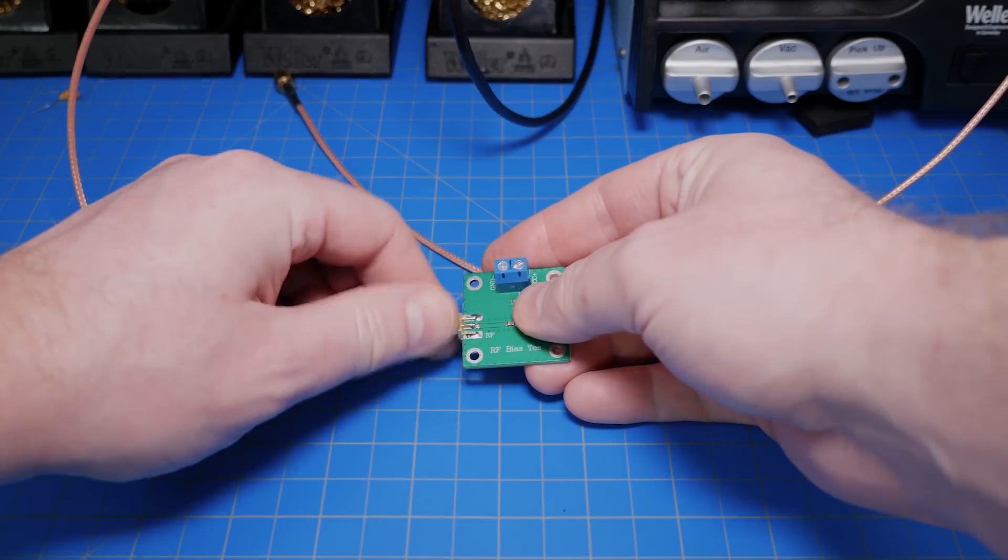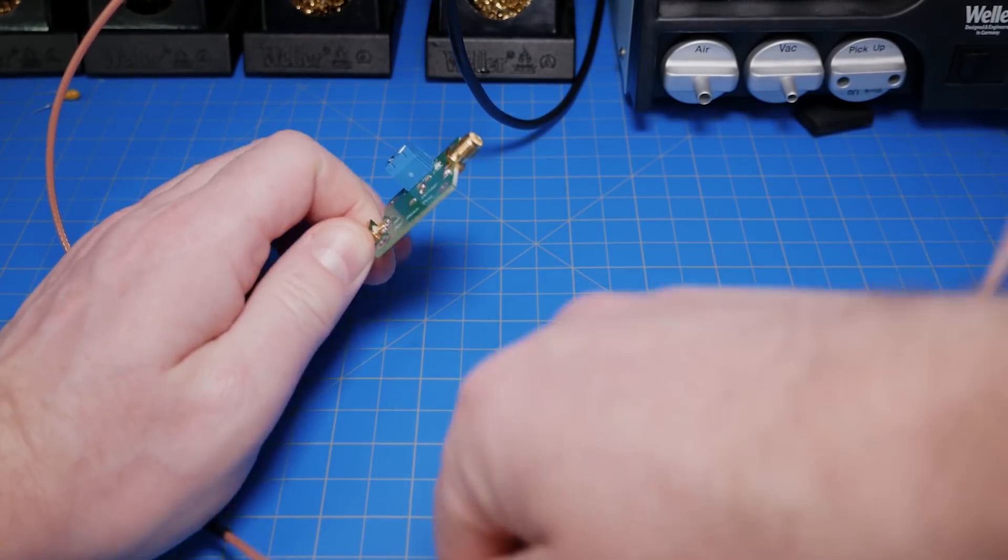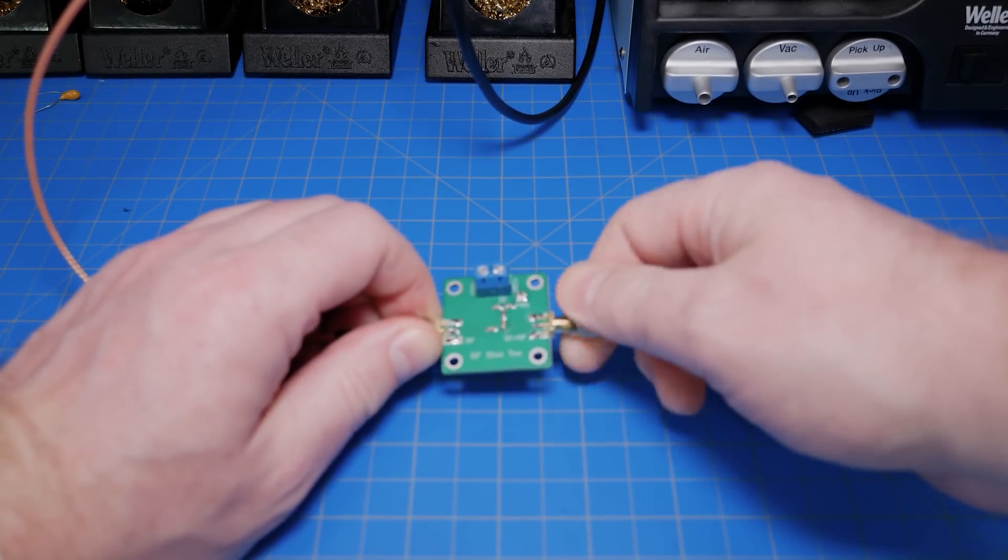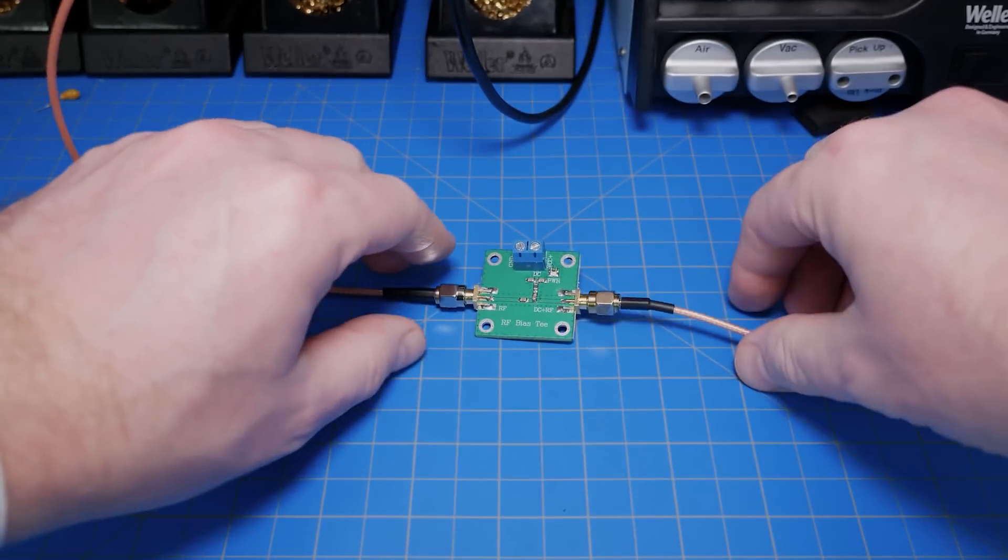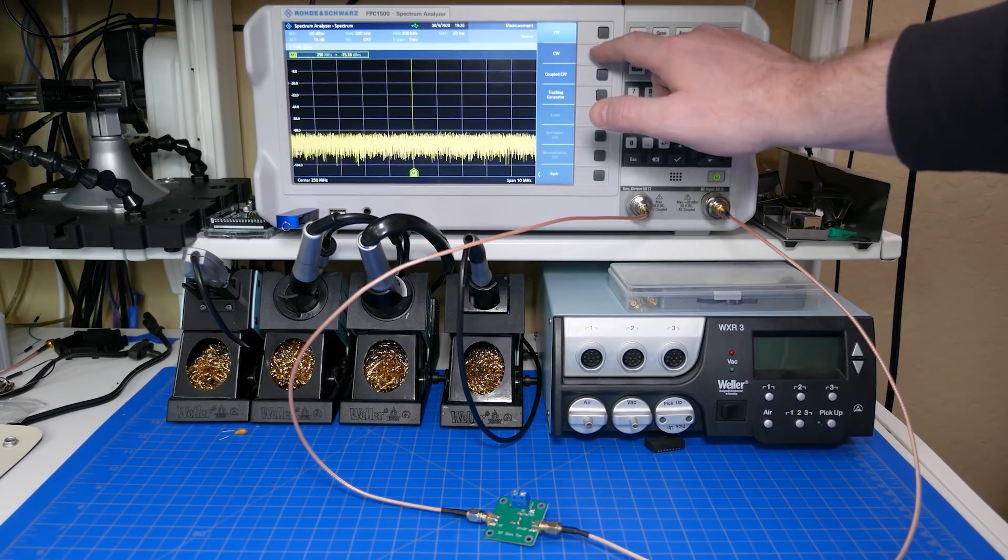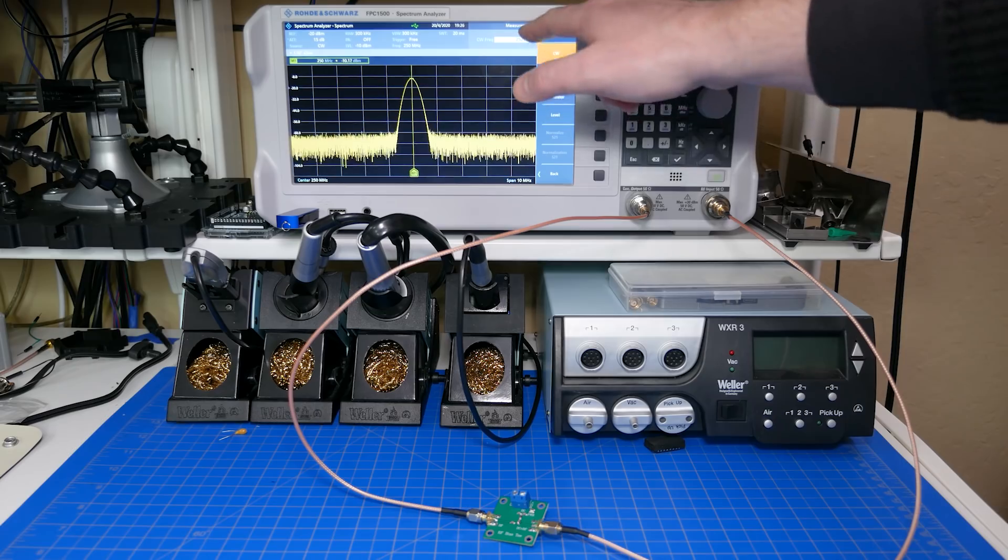To prove that the board works, on the input, I'm connecting a signal generator that injects a 250 MHz signal. The output is being connected to the spectrum analyzer, where we'll set it up to measure at 250 MHz, and we see a spur.